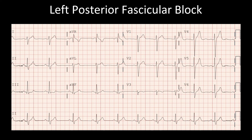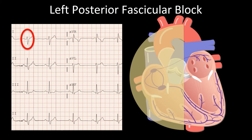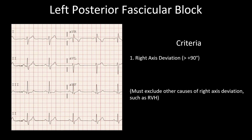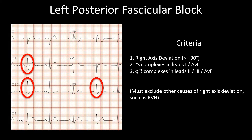Here is an example of left posterior fascicle block. The QRS is not very wide — less than three small squares. Lead 1 is negative and lead 2 is positive, indicating right axis deviation. The criteria for left posterior fascicle block include right axis deviation greater than 90 degrees, and you must exclude other causes of right axis deviation such as right ventricular hypertrophy before making this diagnosis. There is a small R and a large S complex in leads 1 and AVL, and a small Q and a large R complex in leads 2, 3, and AVF.